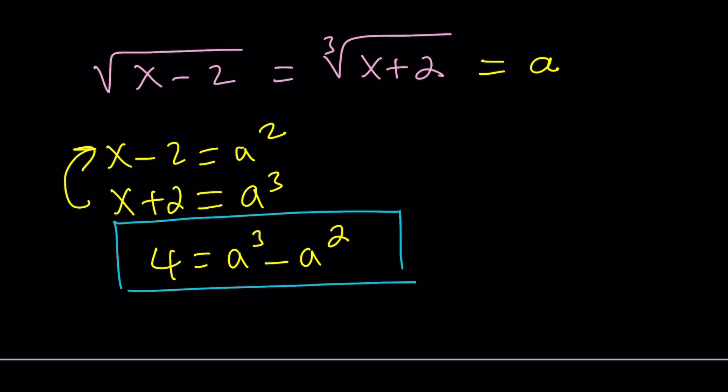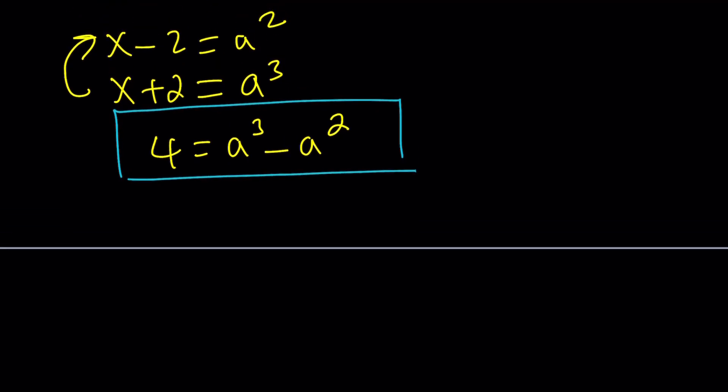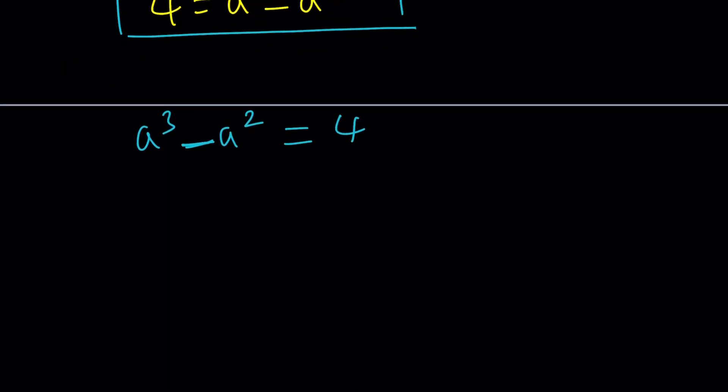But again, how would you find the other solutions? Because we're supposed to have three solutions. So let's take this expression and see how we can factor it. We can make it factorable. First of all, notice that a equals 2 is the solution because 8 minus 4 equals 4. Awesome.